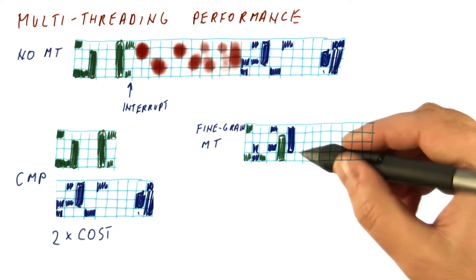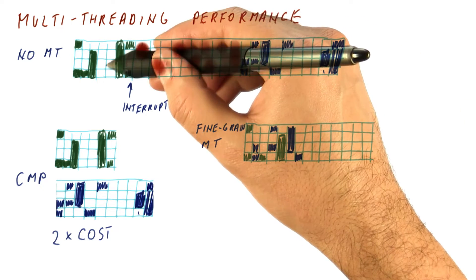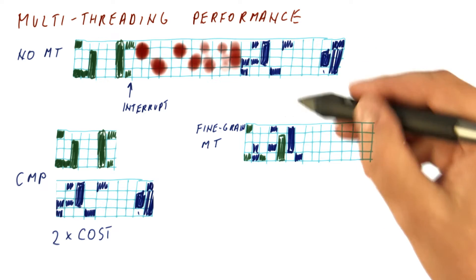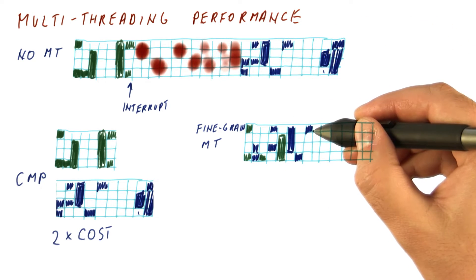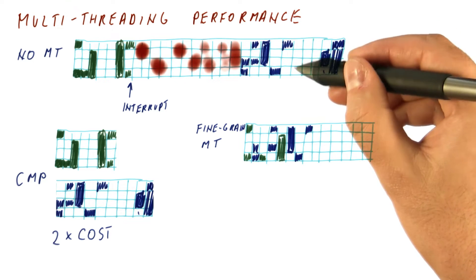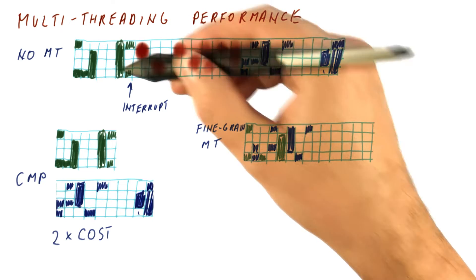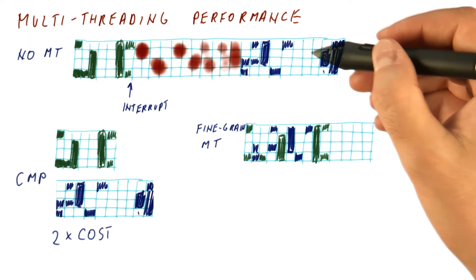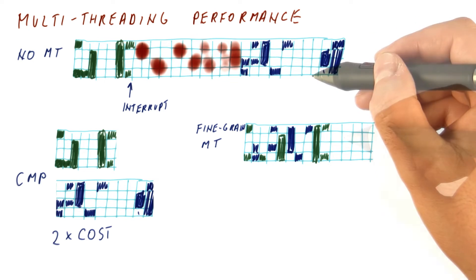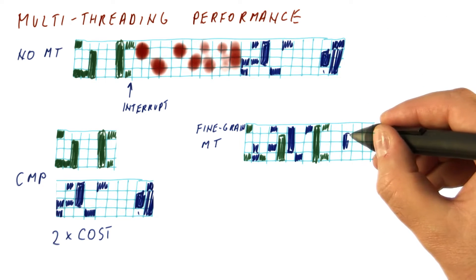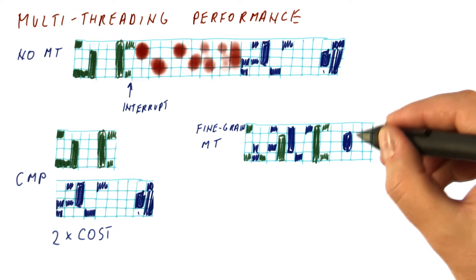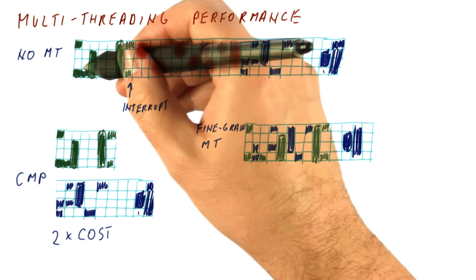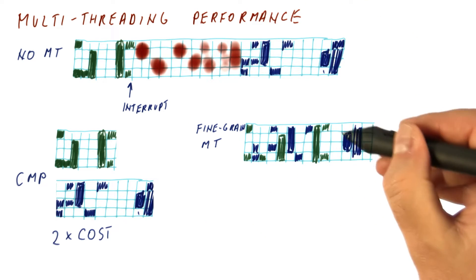The blue thread has something to do, so we spend another cycle on it, while the green thread has nothing ready to run. Then the blue thread gets one more cycle. At that point the blue thread has nothing to do, but the green one now has something, so we do the work of the green thread. Then neither thread can do anything for a moment, but then the blue thread is able to proceed again. As you can see, we get done faster because we eliminate cycles where neither thread was doing anything.